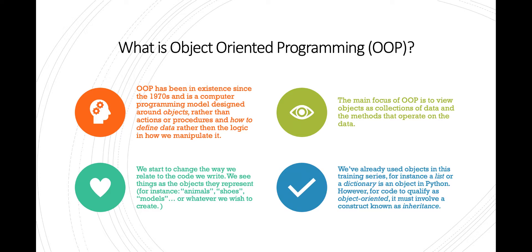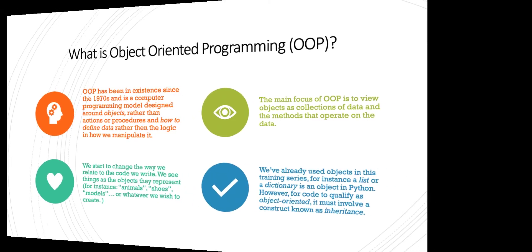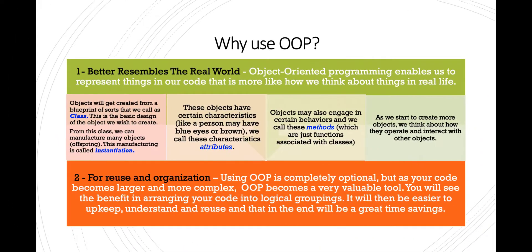We've already used objects in this training series. For instance, a list or a dictionary are Python objects. However, for code to qualify as object-oriented, it must involve a construct known as inheritance. So why even use object-oriented programming?